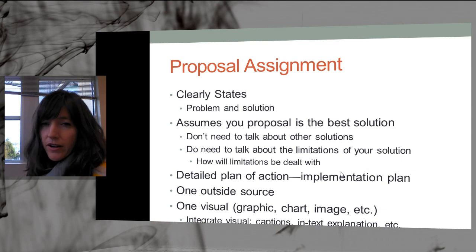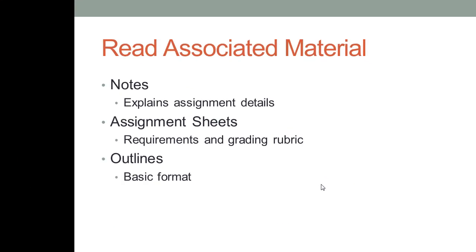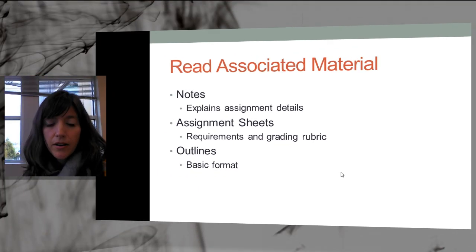Talk about how your visual is relevant. Ask yourself: why am I using this visual? Does it help explain something to my reader? Make sure that you read all of the notes and all of the associated assignment material. There will be two assignment sheets — the feasibility report assignment sheet and the proposal assignment sheet. The assignment sheets have all the assignment requirements and the grading rubric, so they tell you what you need and how you will be graded. I also have some outlines for you which will show you the basic format of the assignments.